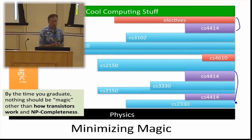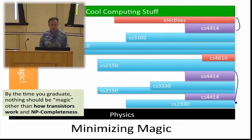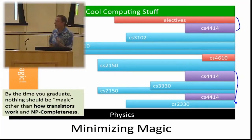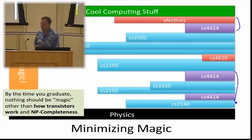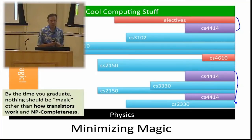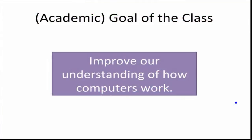By the end of this class there should be very few things about computer systems that you would think of as magic. You wouldn't necessarily understand all the algorithms used for some particular service, but you would feel like if you needed to understand them and had the time and right resources, you could. There's nothing magical going on that you wouldn't know enough to figure out. That's our core academic goal: to understand more about how computers work.